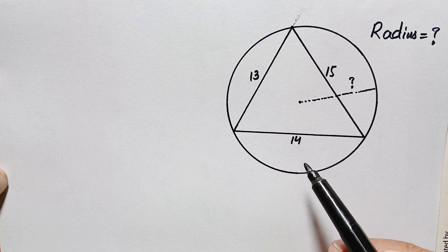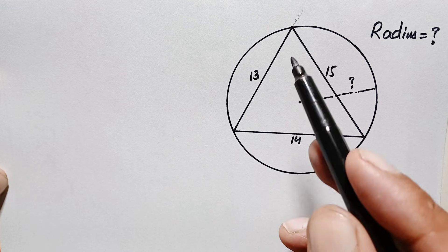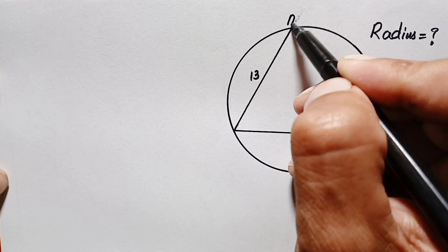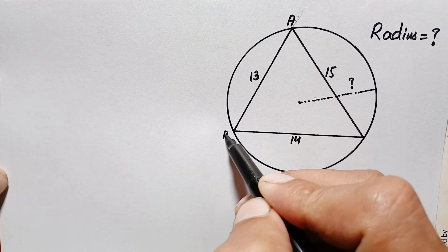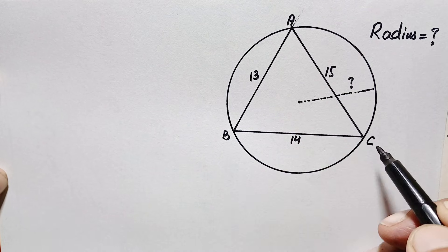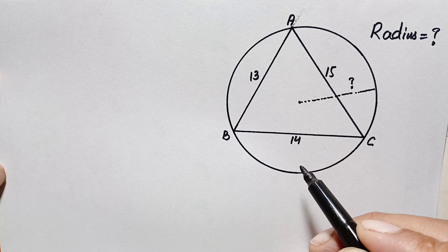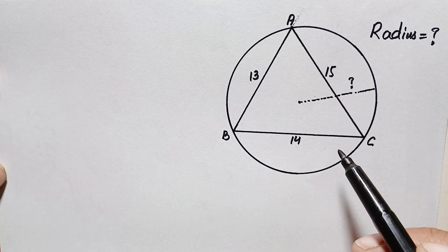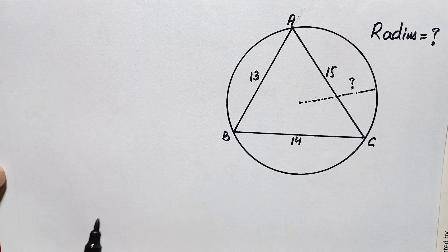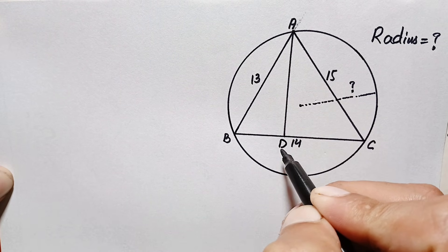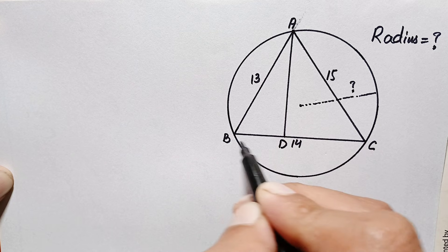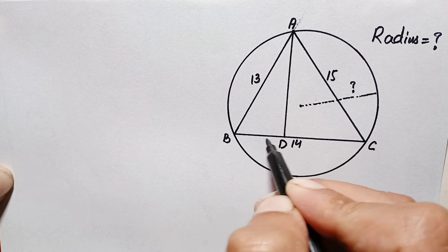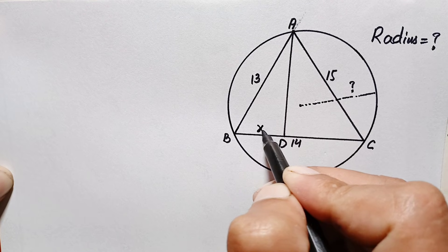Now how can we solve this beautiful geometry math problem? First of all, let us suppose this is our triangle ABC, so this is point A, this is point B, and this is point C. Here we will draw a perpendicular from point A to side BC. Let us suppose this is point D. The total length BC is 14 units, and let us suppose this length BD is equal to x units.